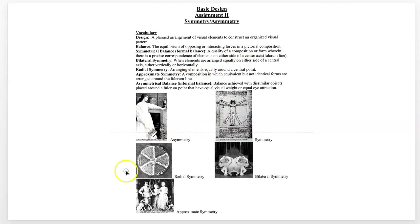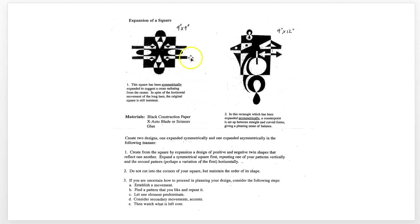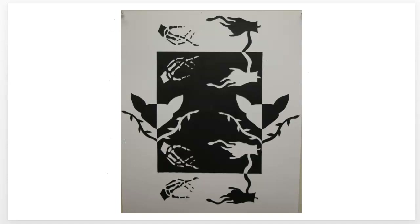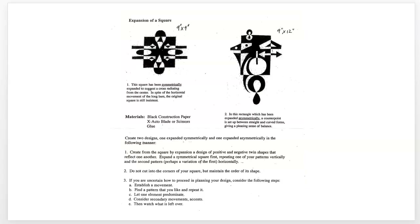Let's look at the design brief and assignment sheet. It has vocabulary that reiterates what we talked about, and at the bottom shows an example of what you're going to be doing. You're going to take a square piece of black paper and expand it out to create a symmetrical design and an asymmetrical design. Be careful not to cut into the corners. The assignment sheet shows some ways to think about working. You'll need black construction paper, an X-Acto knife or scissors, and glue to mount it onto a piece of white paper.